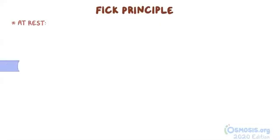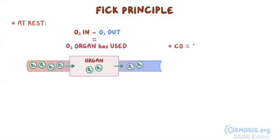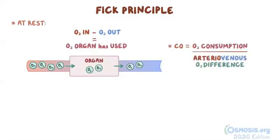Another way to measure cardiac output, which does not involve using the stroke volume or heart rate, is called the Fick Principle. The Fick Principle simply states that at rest, the oxygen going into an organ minus the oxygen left out of an organ must equal how much oxygen that organ has used. Using the Fick Principle equation — cardiac output equals oxygen consumption divided by arterial venous oxygen difference — cardiac output can be calculated. By convention, the organ used for calculation is actually the body.